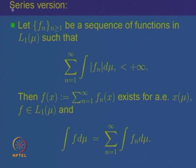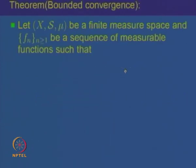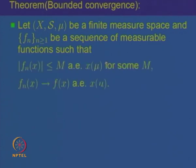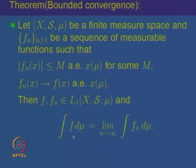There is another interpretation of the dominated convergence theorem for finite measure spaces. If (X, S, μ) is a finite measure space and f_n is a sequence of measurable functions all dominated by a single constant M almost everywhere, and f_n(x) converges to f(x), then the integrals of f_n converge to the integral of f. This is a particular case of DCT when the underlying measure space is finite.